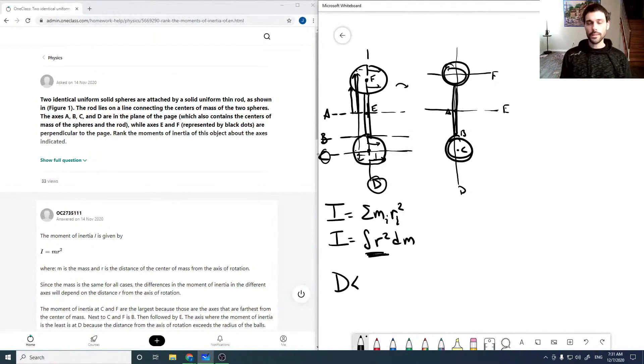B is then going to be our next highest because it has the next highest vectors, and so A and E are then our next lowest as they're both the same. So we've got A equals E, and then that's going to be less than B, and that's going to be less than our C which equals F.